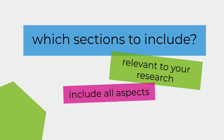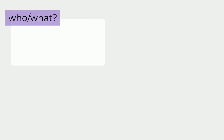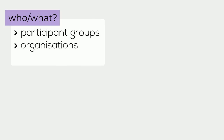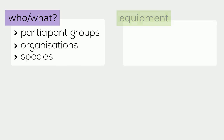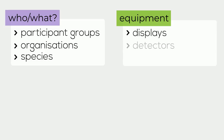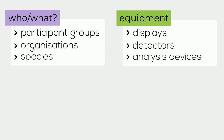We can't give you specific sections to include, but here are some aspects to consider. Tell us who or what you investigated — this could be participant groups, organisations, animal or plant species, or anything else that was the source of your data. Describe any relevant physical equipment used, such as displays, detectors, analysis devices, or other specialist equipment.